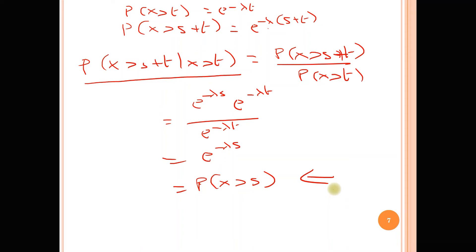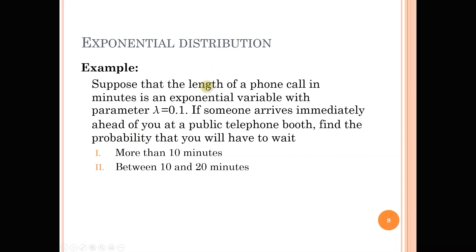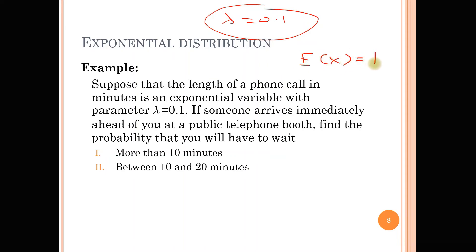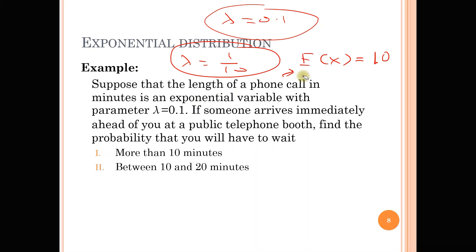We proved it intuitively through the bus stop example, and now we've mathematically proven it as well. Let's take a worked example: the length of a phone call in minutes is an exponential variable with parameter λ = 0.1. Note that here the parameter is given directly. But if instead you were given a mean of 10, you would need to compute λ = 1/10 = 0.1.